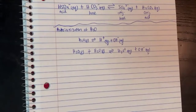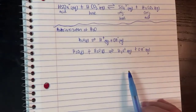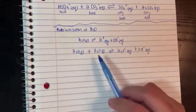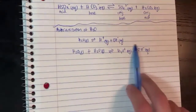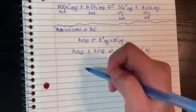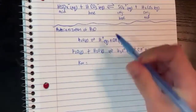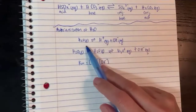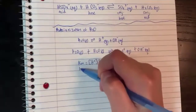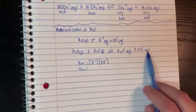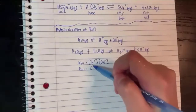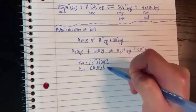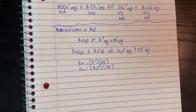Depending on the temperature, water can split differently because if you change the temperature, the K position can change. So if we ever had to write K for this equation, KW can be written as H⁺ times OH⁻. You don't put water on the bottom because it's liquid. Or you can write using the second equation: KW, the K of water, is H₃O⁺ times OH⁻. So that's water splitting.